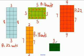The last shape has three units on two sides and two units on the other two sides. Three plus two plus three plus two equals ten.